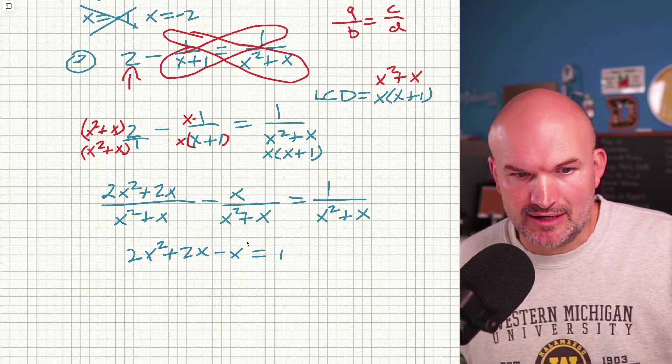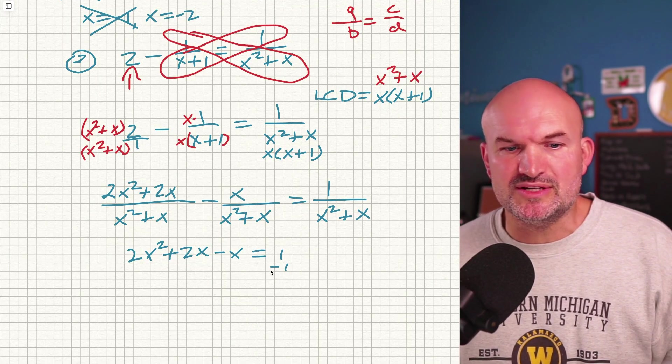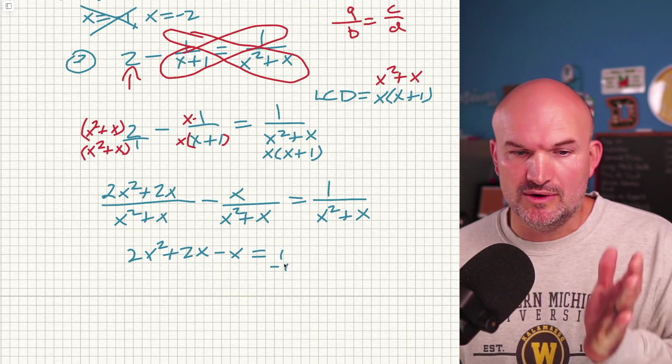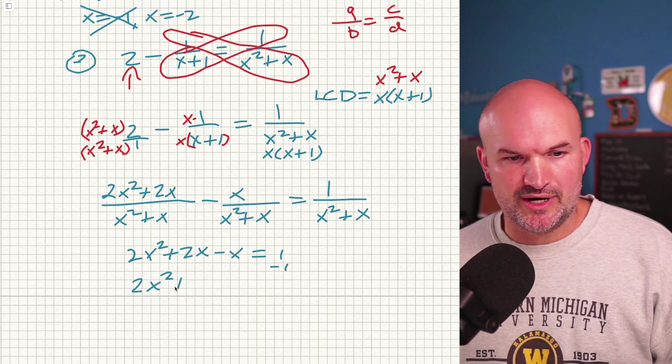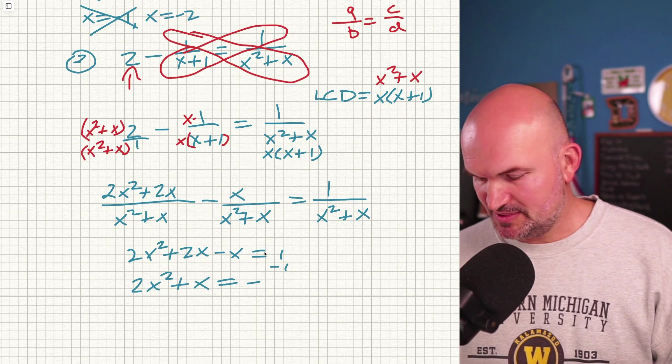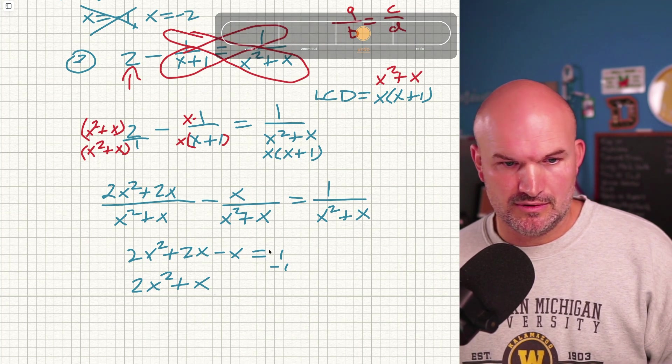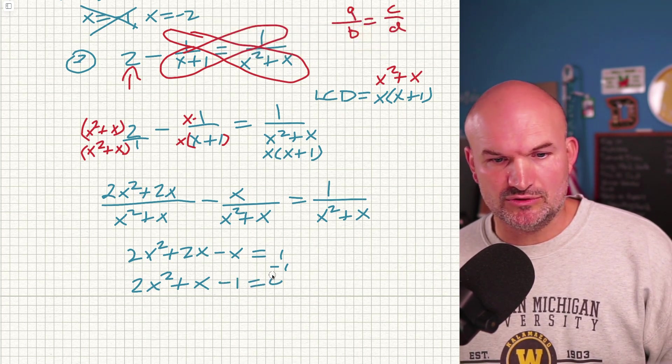Now, I recognize this is a quadratic, and we know when we're dealing with quadratics, we always want to go ahead and set it equal to 0. So I'll subtract a 1 over to the other side, and I get 2X squared plus X minus 1 equals 0.